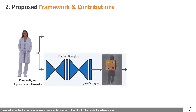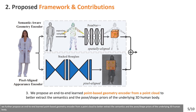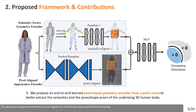Specifically, besides the pixel-aligned appearance encoder as used in PIFU, PIFUHD, ARC, and other works, we further propose an end-to-end learned point-based geometry encoder from a point cloud to better extract the semantics and the pose-shaped priors of the underlying 3D human body. The appearance and geometry features are fused together for joint deep implicit function learning.